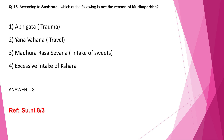Question number 115: According to Sushruta, which of the following is not the reason of Moodha Garbha — Abhigata, Yana Vahana, Madhura Rasa Sevana, or excessive intake of Kshara? The correct answer is option 3, Madhura Rasa Sevana. This is a direct question from Sushruta Moodha Garbha Nidana — a three-star topic. The main headings under Moodha Garbha are its Nidana, types, Moodha Garbha Gati, Asadhya Lakshana, and Moodha Garbha Chikitsa.